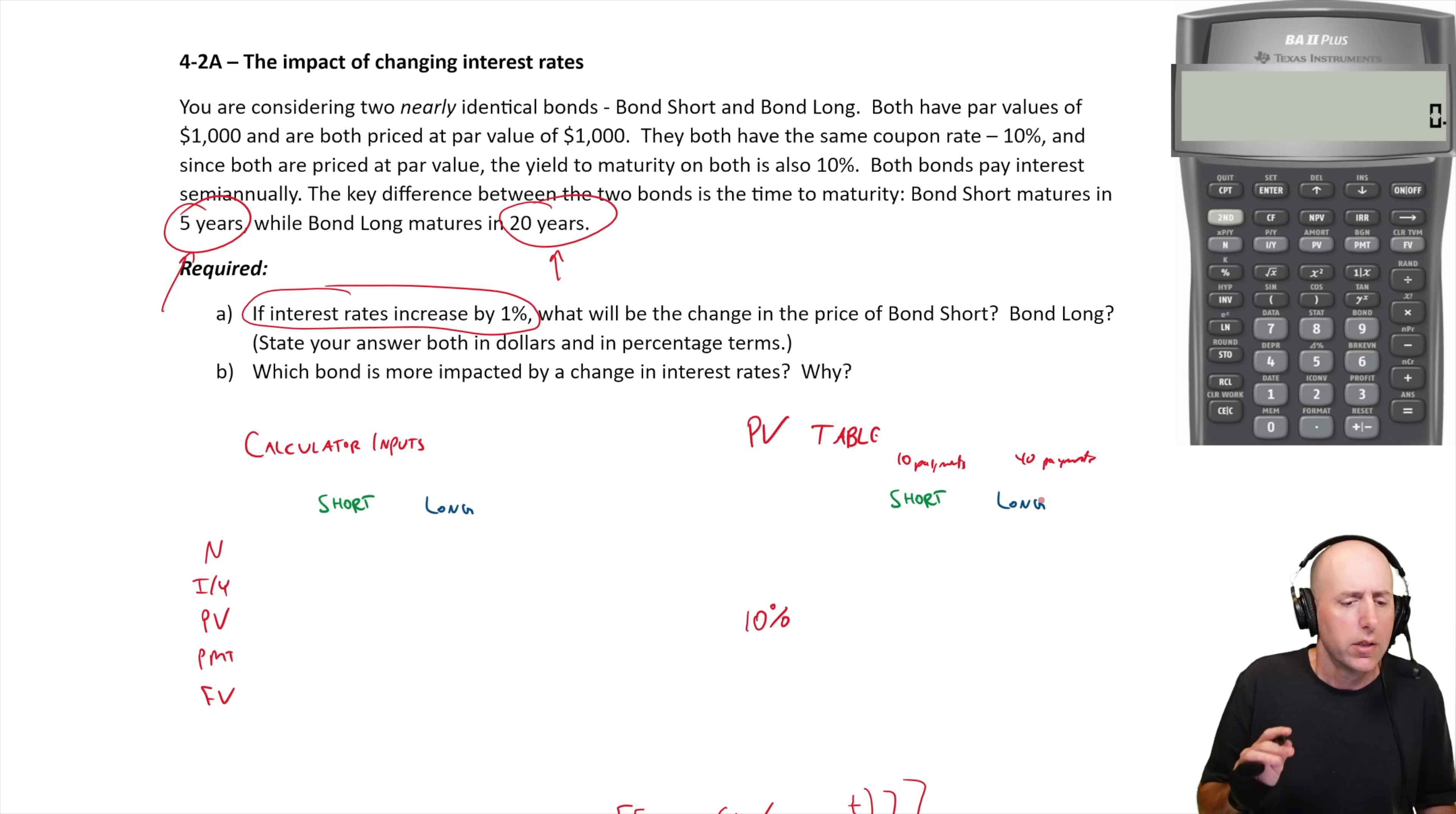We already know the price at 10%. When the yield to maturity is 10%, the bond prices are a thousand dollars for both short and long. What about when the interest rates go up to 11%? What is the price going to be?